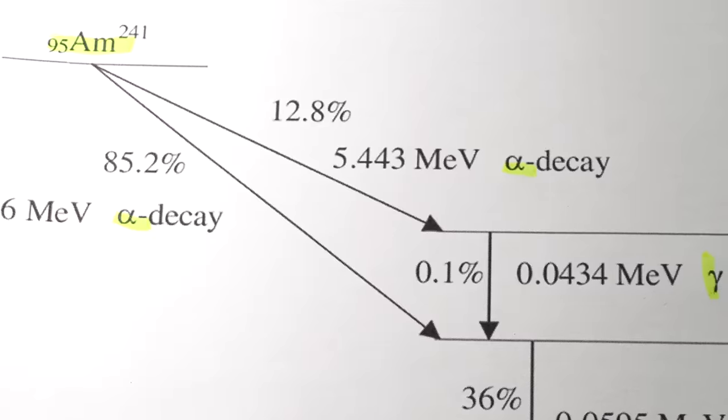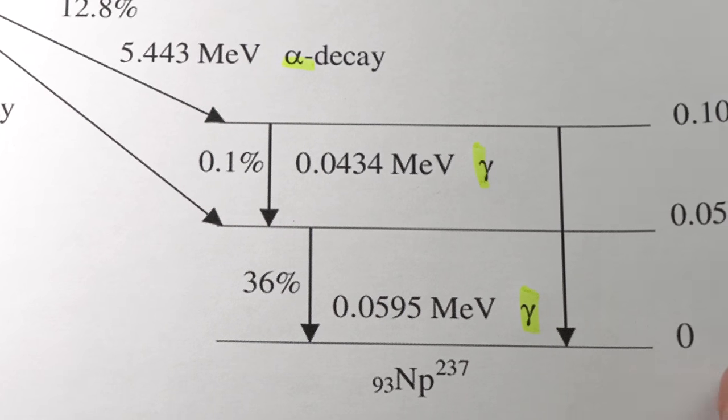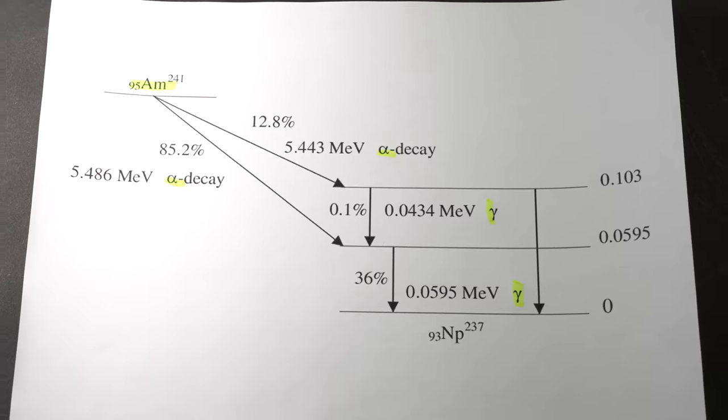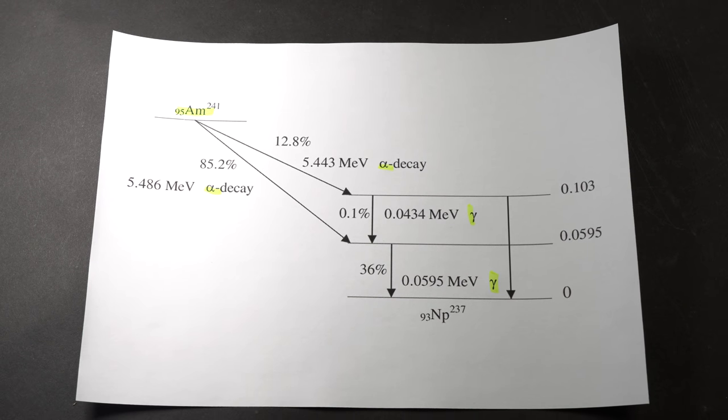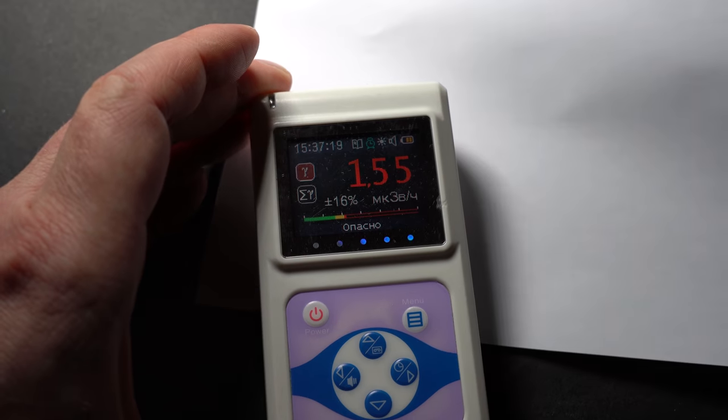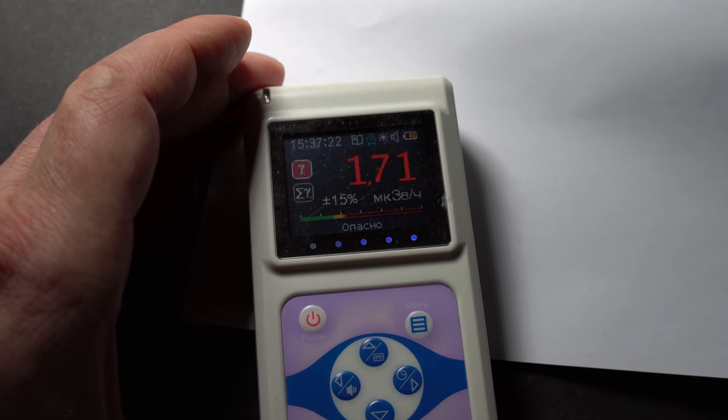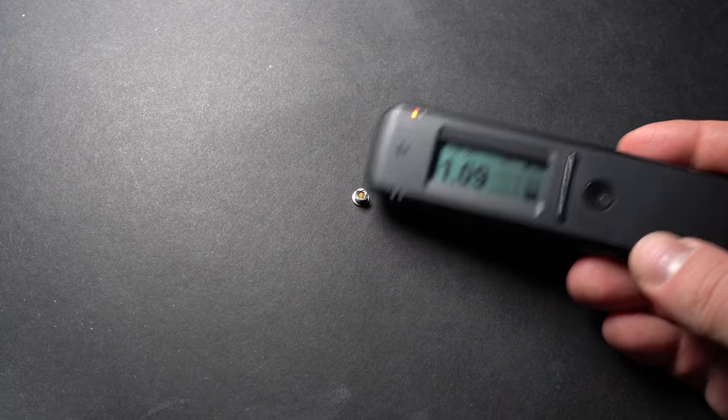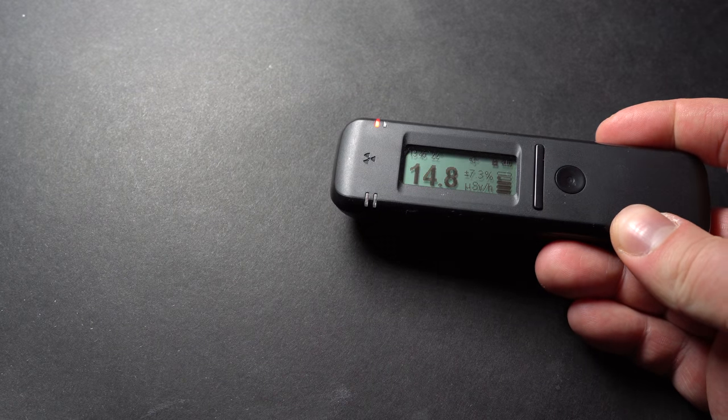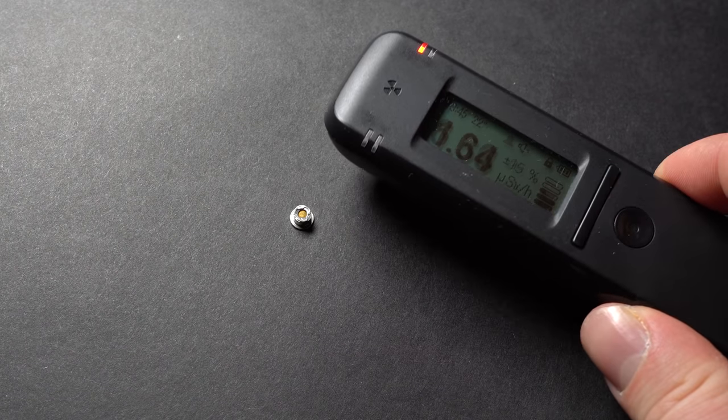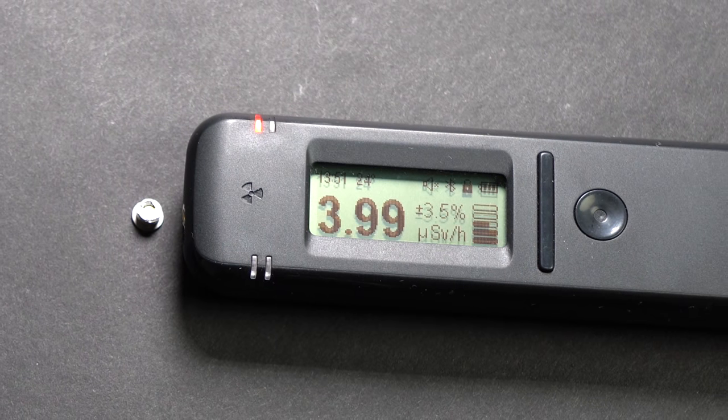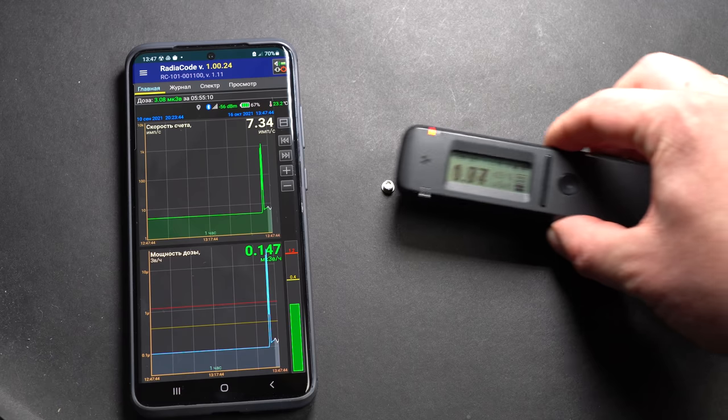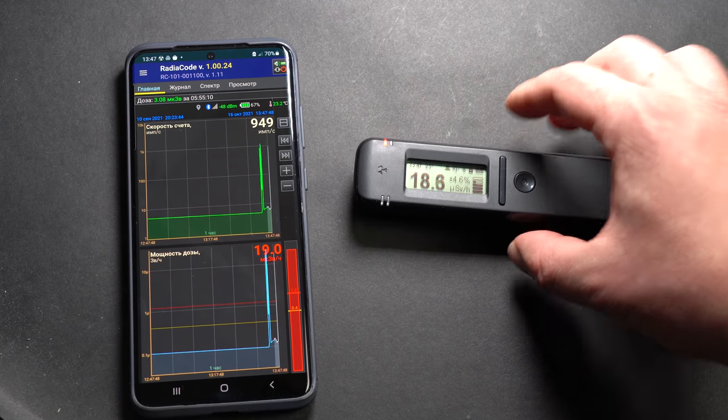If we look at the diagram of americium-241 decay, we will see that at first it emits an alpha particle, and then the likelihood of it emitting a gamma quantum of about 60 keV with a probability of 36%, and after that it turns into a neptunium atom. Most probably it was this weak gamma radiation that my dosimeter detected when the source was covered by paper and blocked the alpha radiation. If we use another type of dosimeter with a scintillation detector, we will see a different reading.